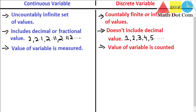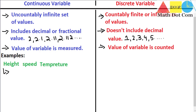Let's have some examples for further understanding. Examples of continuous variables are height, speed, and temperature. All these variables need to be measured — we cannot count them. We usually say 'measure the height,' 'measure the speed,' 'measure the temperature.' The value of a continuous variable is measured. For height, a person's height can be in decimal — for example, 54 inches or 56.6 inches — so it can take infinite decimal values. Similarly, speed can be 100 km/h or 100.2 km/h, and temperature can be 40 degrees Fahrenheit or 40.2 degrees Fahrenheit.